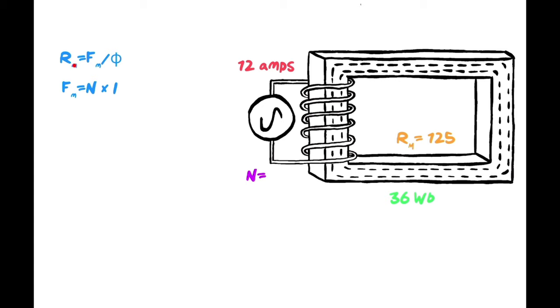I also know that my MMF is equal to the number of turns times the amps. So once I have this calculated, I can just move this over. I don't have this but I do have the amps, and I can go ahead and calculate from there. We did a little bit of transposing: Rm equals Fm over phi. Rm equals N times I, which is just replacing that Fm with this part of the formula, and I can just go ahead and plug all the numbers in.